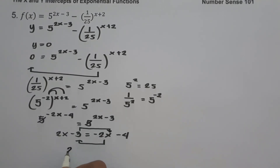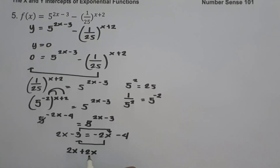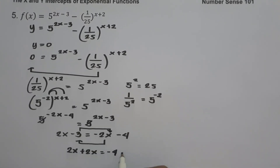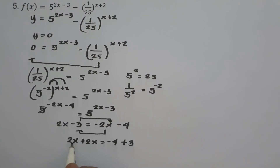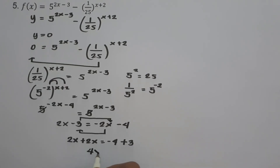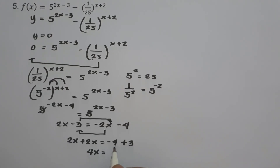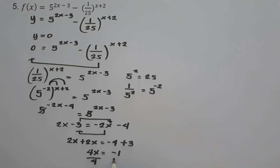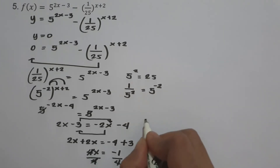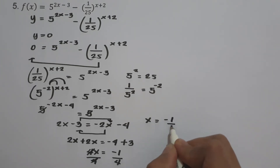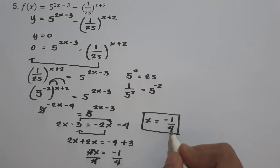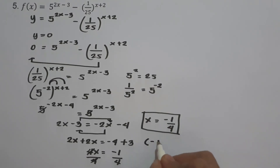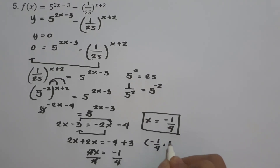Simplifying: 4x equals negative 1. Dividing both sides by 4 gives x equals negative 1 over 4. Since x is negative one-fourth and y is 0, our x-intercept is (-1/4, 0).